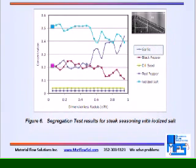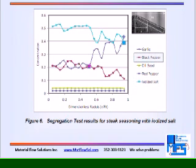We plot the concentrations as a function of distance down the pile. In this example, the salt and the black pepper accumulate at the top of the pile, while the garlic accumulates at the bottom of the pile.